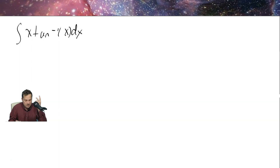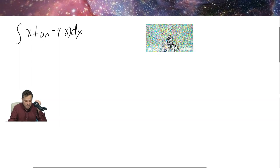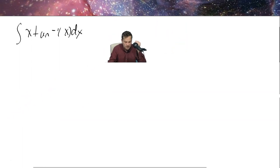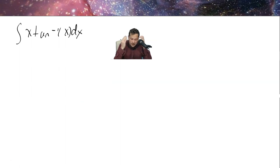To do that, we observe that we have x and then we have tan inverse of x — a product of two functions. It doesn't seem like substitution will be particularly useful here, so instead we can try to hit this with integration by parts.